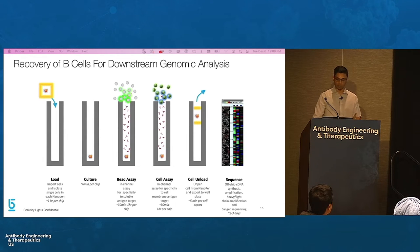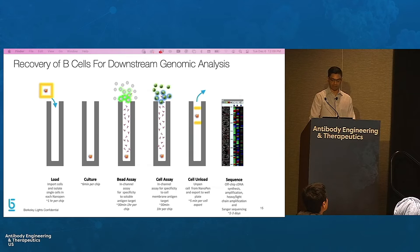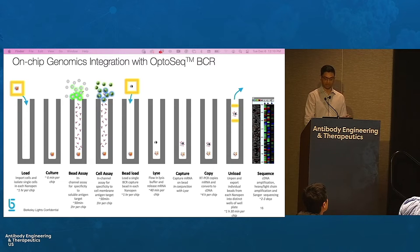Opto-B discovery workflows provide multiple approaches for recovery of paired heavy-light chain sequences of antigen-specific antibodies. In the first method, B-cells are unloaded into well plates for subsequent cDNA synthesis, cDNA amplification, followed by amplification of antibody heavy-light chain genes and Sanger sequencing. The second method integrates on-chip genomics by performing cell lysis and cDNA synthesis on the chip; single beads are then unloaded into well plates for cDNA amplification, followed by amplification of antibody heavy-light chain genes and Sanger sequencing.